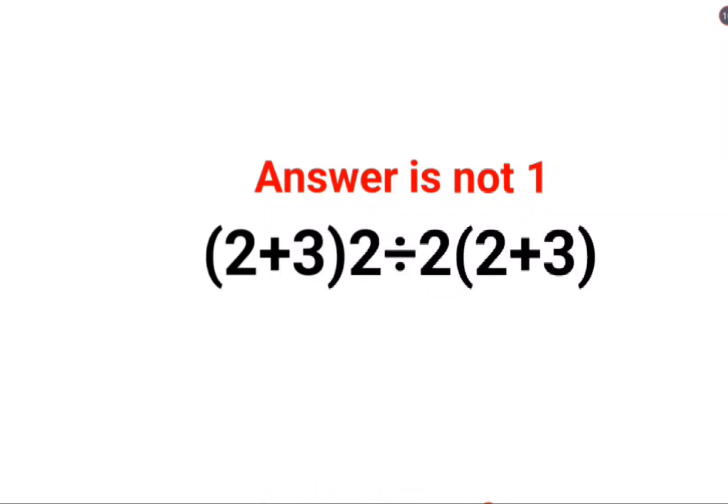Welcome everyone, so today we are going to understand why the answer for this entire operation is not 1. Here, a lot of people see that it's so easy, right? Since it is division, you can cancel this and this, and this also you can cancel.